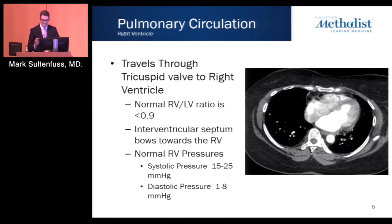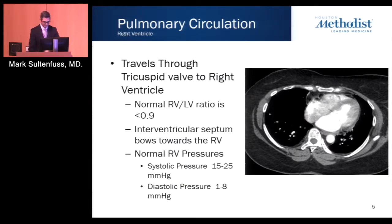Right ventricular hypertrophy, which is better assessed by echocardiography, is really only going to be seen in chronic pulmonary hypertension and/or CTEPH.